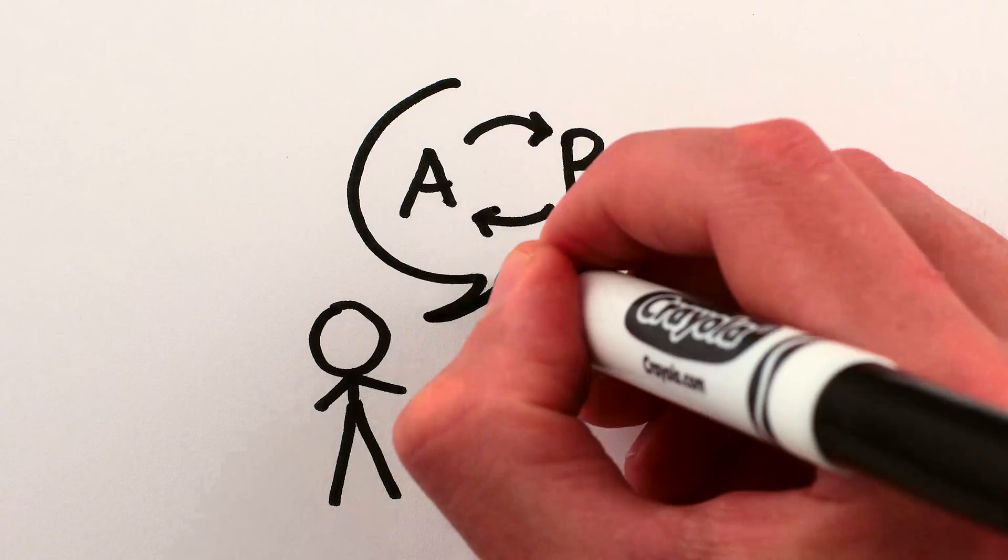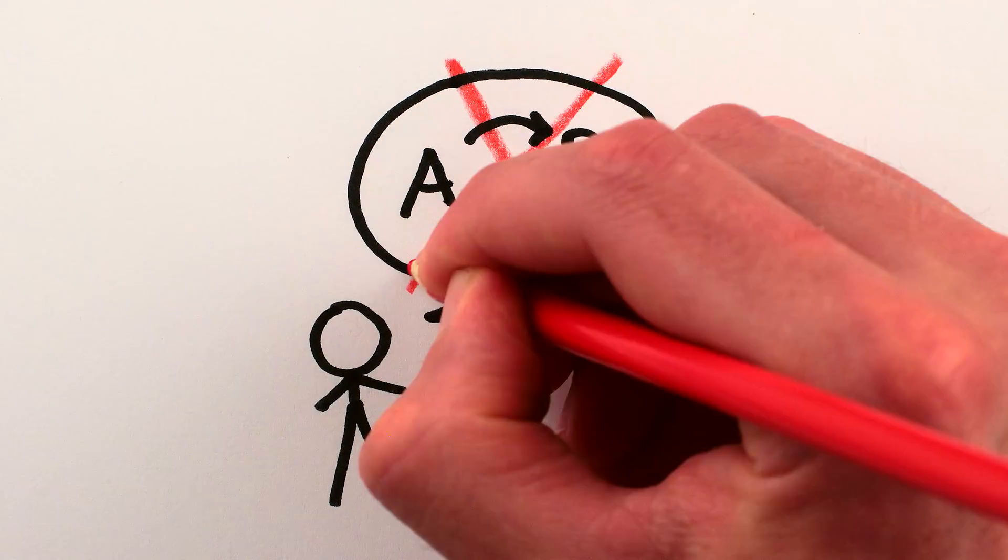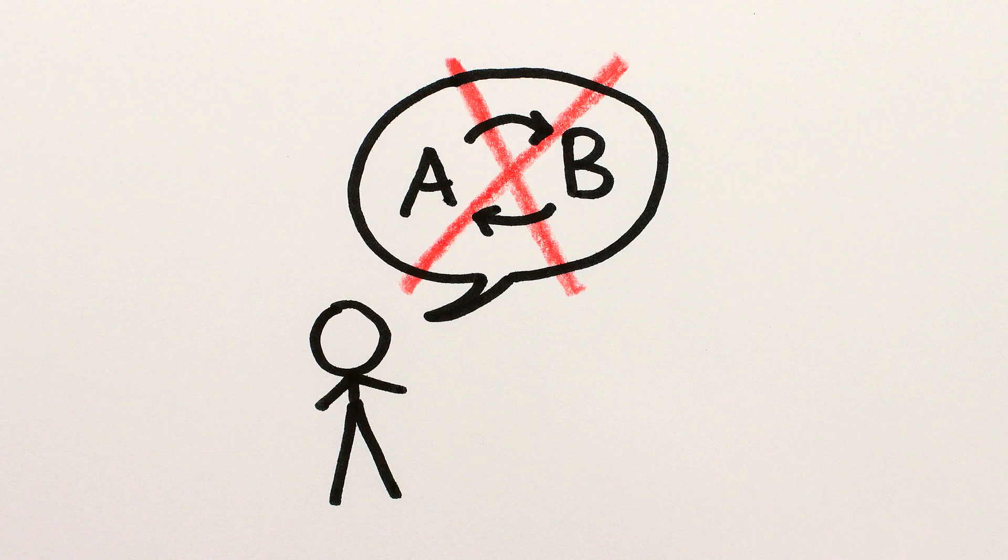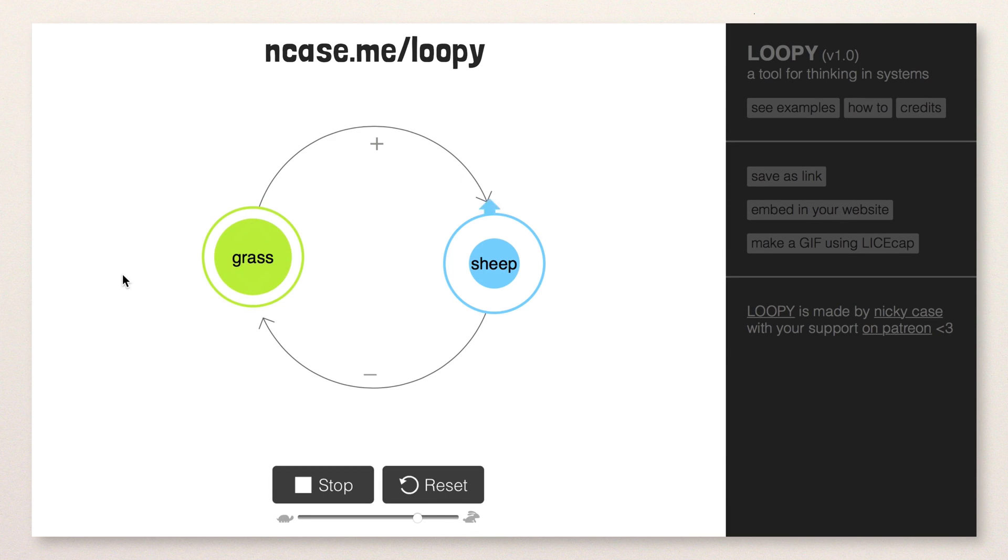Also you may have noticed there was no mention of feedback loops in the main video. That's because from a causal point of view, feedback loops like how more grass means more sheep means less grass means less sheep means more grass, and so on.